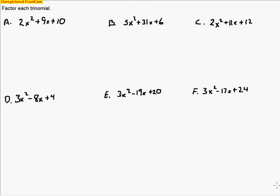Today we are going to be factoring trinomials, and this time the form is a little different. This time we have a coefficient in front of the x squared term — we call that coefficient 'a' typically. So we have an 'a' term here, like the 2 in front of the first one, the 5, or this 2. And then the 'b' term can be positive or negative. On the first three problems, the b term is always positive, and on the second set of three problems, the b term is negative.